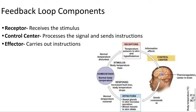So how do our bodies maintain homeostasis? They do this through things known as feedback loops. Feedback loops have three main components: a receptor, which receives a stimulus; a control center, which processes the signal and sends instructions; and an effector, which carries out those instructions.